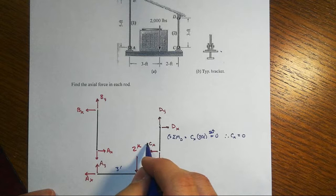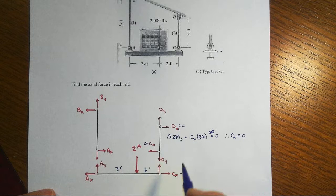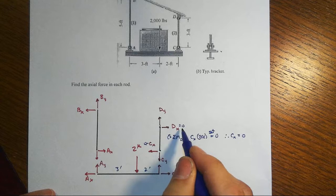Well, if cx is zero, then sum of forces in the x means dx has to be zero, or I could sum moments about point C and independently arrive at the same conclusion.